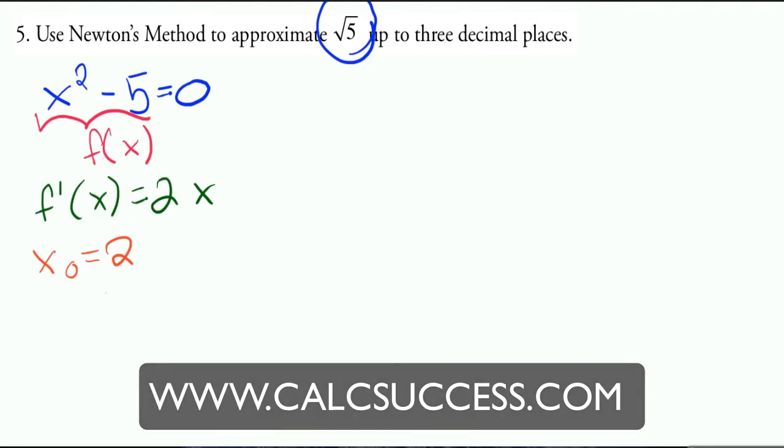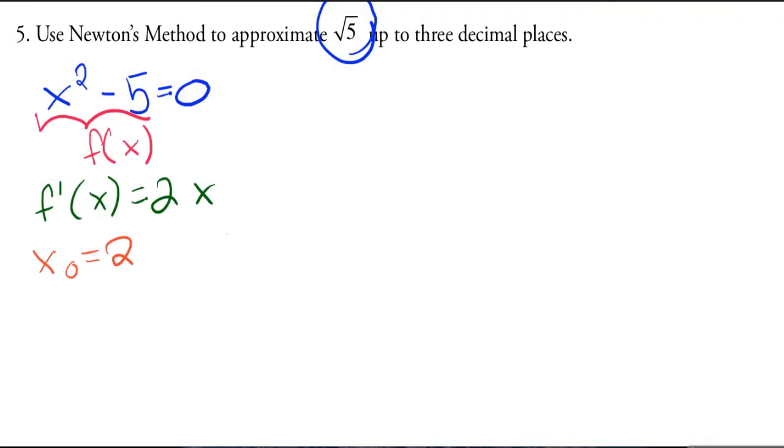Okay, so then we have our formula to give us the successive values. Let's write it down here somewhere on the corner. So x sub n plus 1 is equal to x sub n minus f of x sub n over f prime of x sub n.